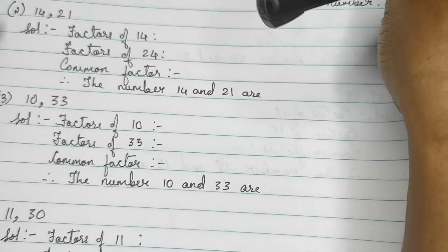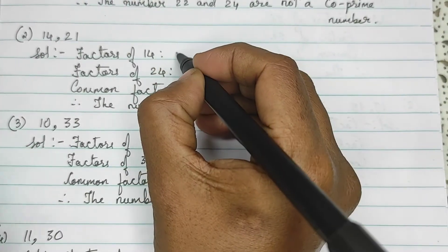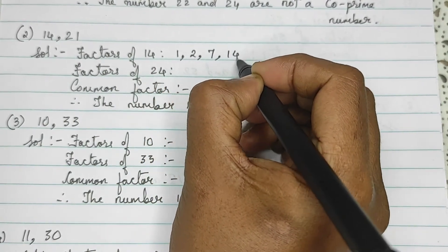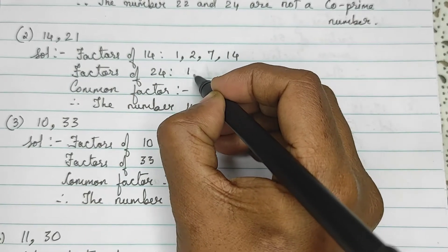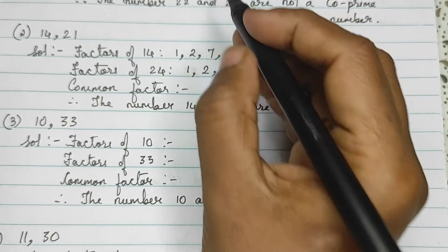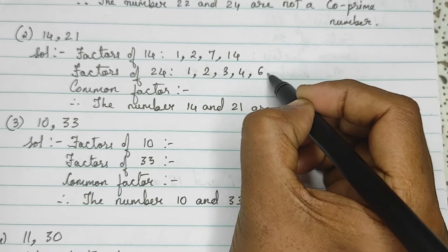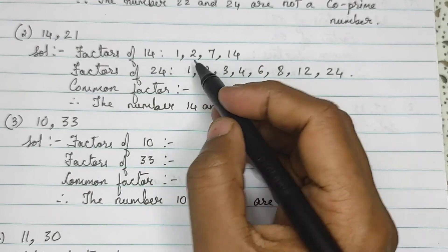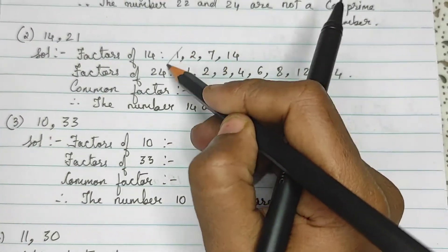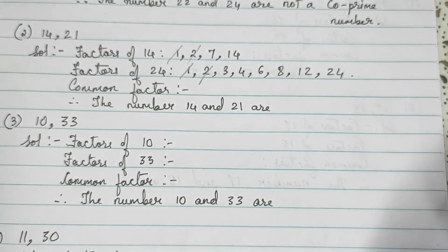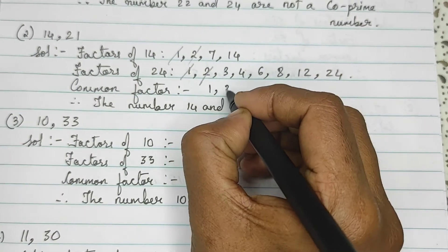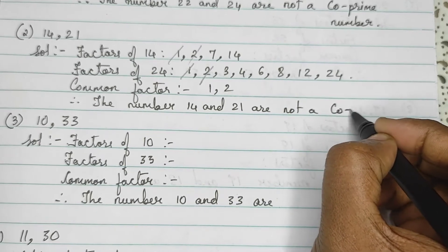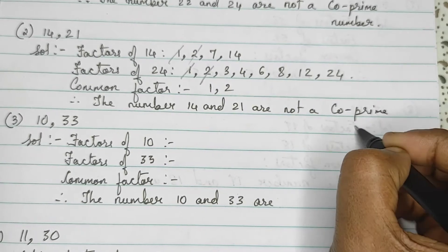Let's see the second sum. 14 is divisible by 1, 2, 7 and 14. 21 is divisible by 1, 3, 7 and 21. So, common factors we have 1 and 7. So, again, it is not a co-prime number.